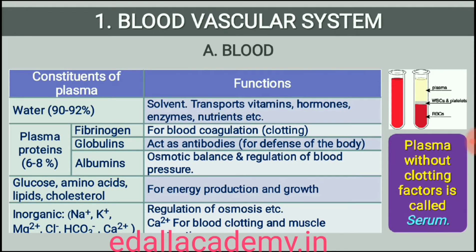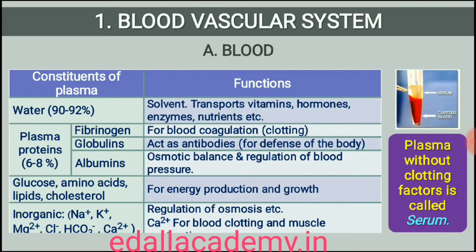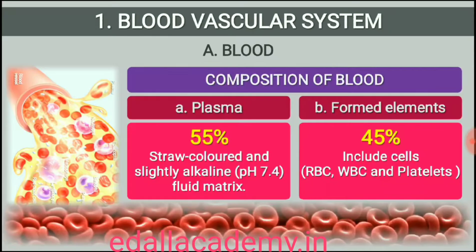Glucose, amino acids, lipids, etc. are also present in the plasma as they are always in transit in the body. Factors for coagulation or clotting of blood are also present in the plasma in an inactive form. Plasma without the clotting factors is called serum.